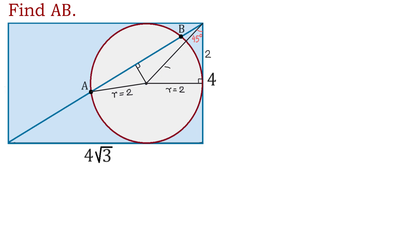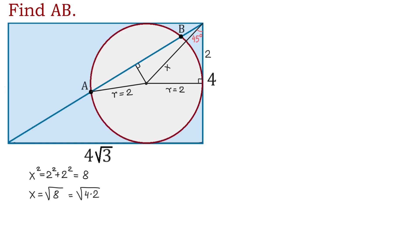In this triangle each of the legs is 2 units and we can find the hypotenuse using the Pythagorean theorem. Let's call the hypotenuse X and we will write that X squared equals 2 squared plus 2 squared, which is 8. To find X we will take the square root of 8, and we can write 8 as a product of 4 and 2, and square root of 4 is 2. So X equals 2 square root of 2.